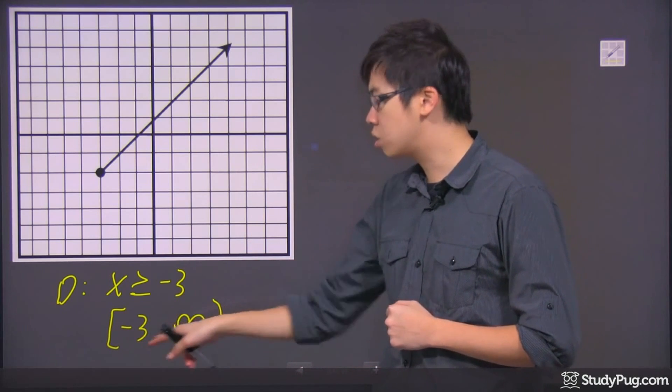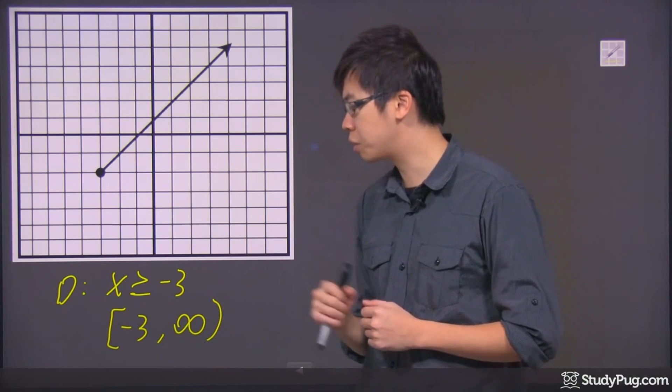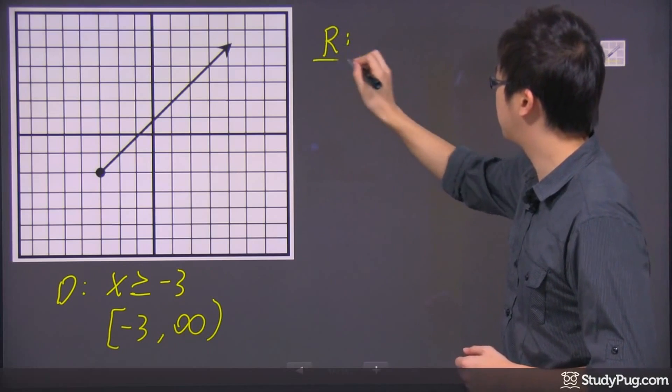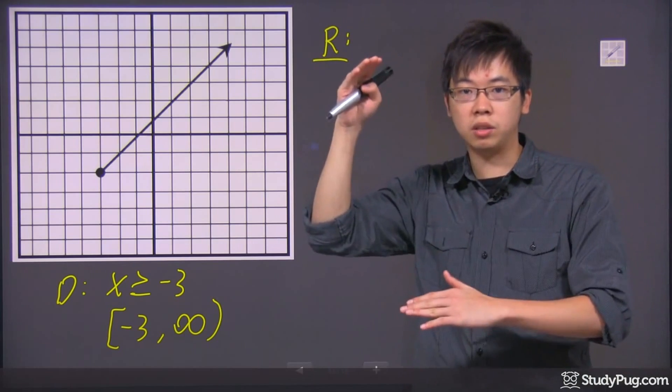I believe this is called the interval, and another one's called a set. And what about the range? The range is the same thing, but this time you look at the y-axis, right?